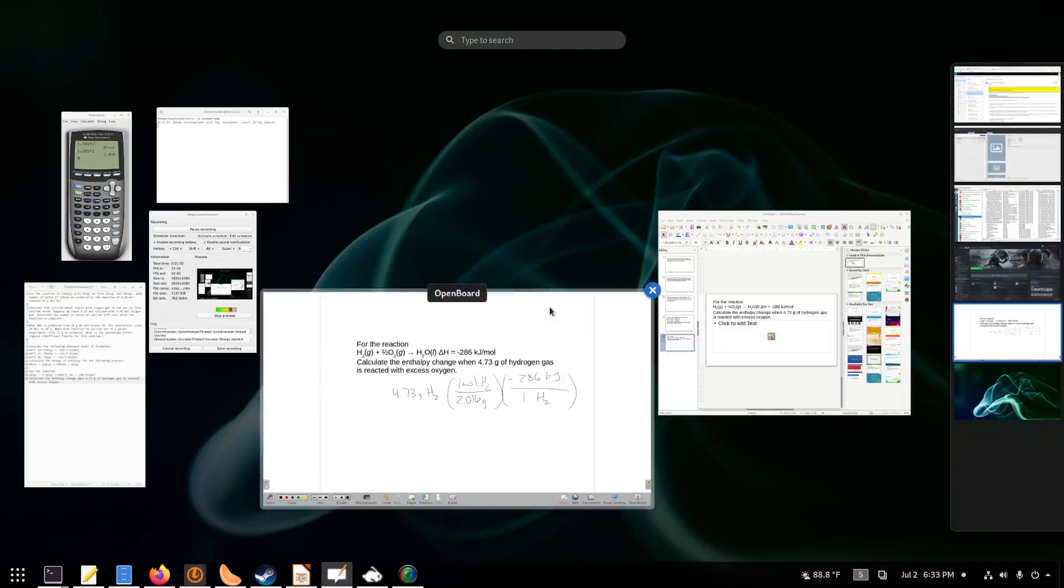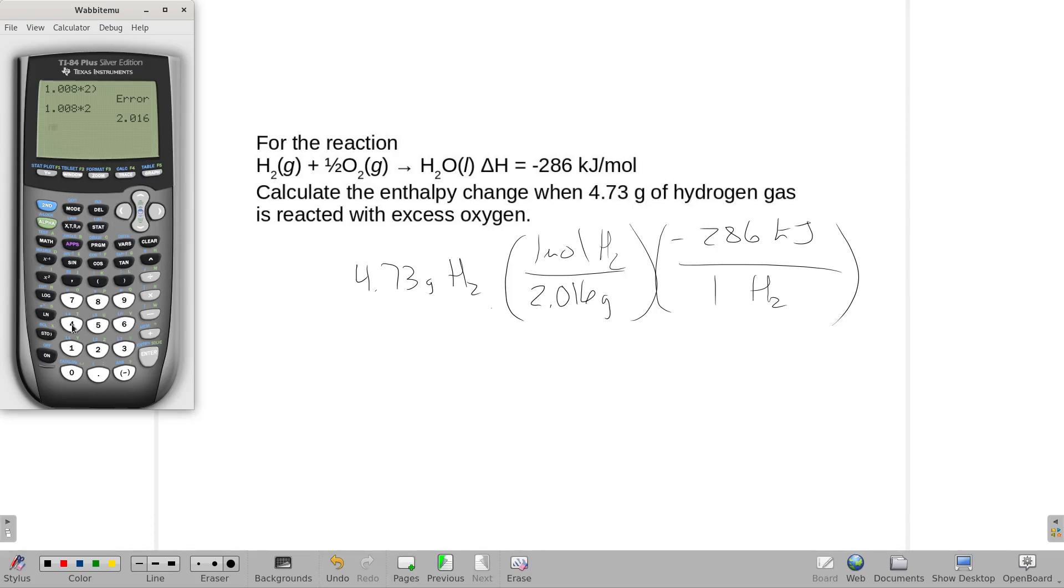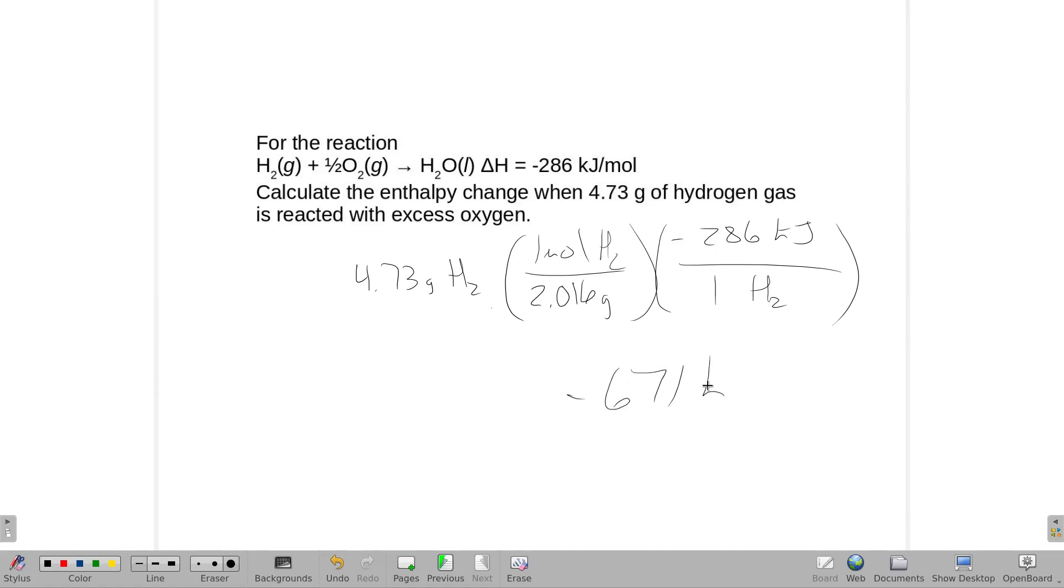So to do this math, we will take 4.73, divide it by the molecular weight of the hydrogen, and then multiply that by negative 286, and we get an answer of negative 671 kilojoules.